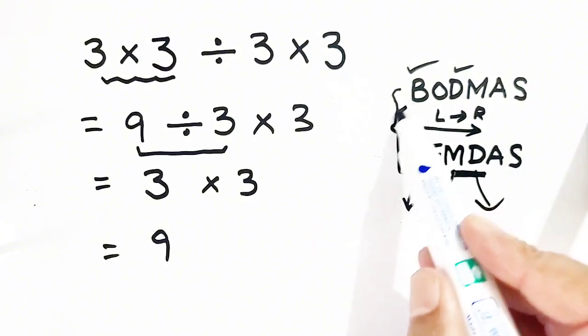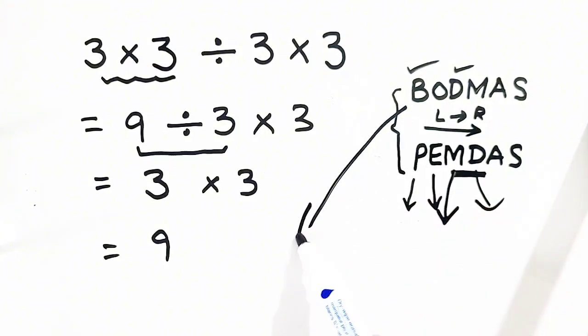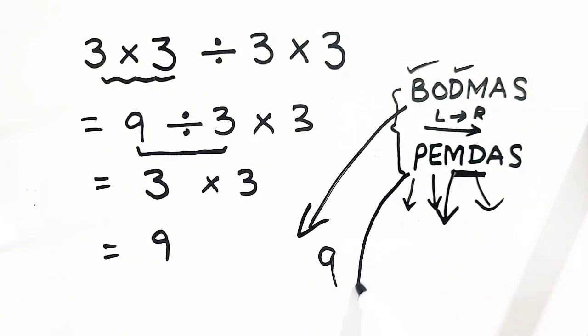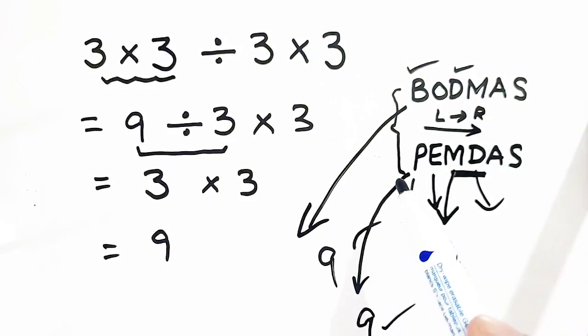Three multiplied by three is equal to nine. So according to BODMAS principle the answer is nine, and according to PEMDAS principle the answer is nine. Both rules are correct. Thank you.